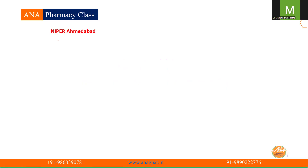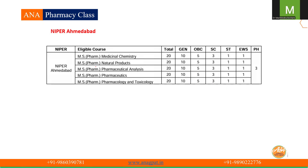Let's look institute-wise. So at NIPER Ahmedabad, in MFARM and MS, there is medicinal chemistry, natural product, analysis, pharmaceutics, pharmacology and toxicology — all these seats are available. MBA is not available there. These are the seat distributions category-wise, with total seats being 20 each for every course. I will also tell you how many seats are available for general category, OBC category, and ST category in all NIPERs.